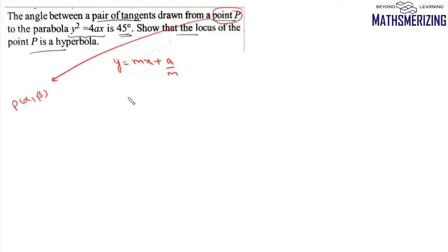It'll become a quadratic in m: αm² - βm + a = 0. This has two roots m₁ and m₂.